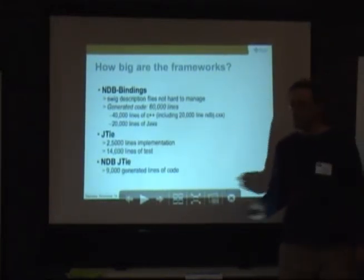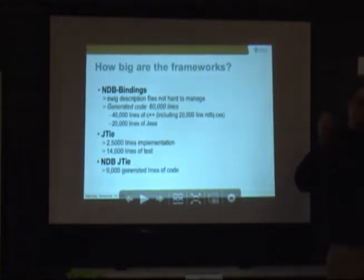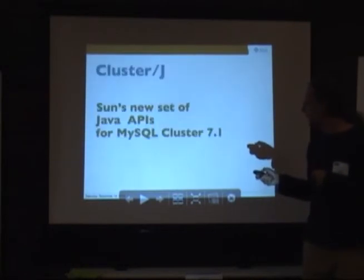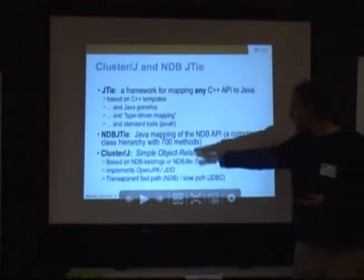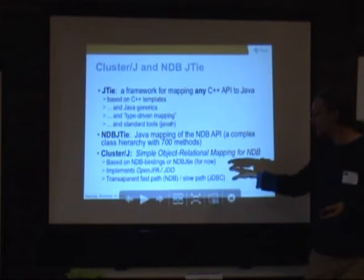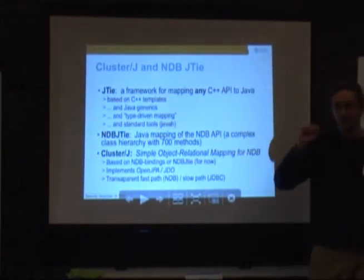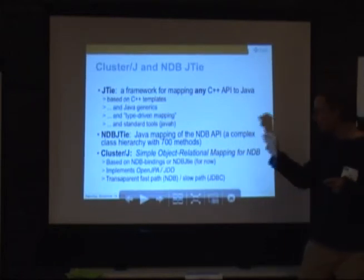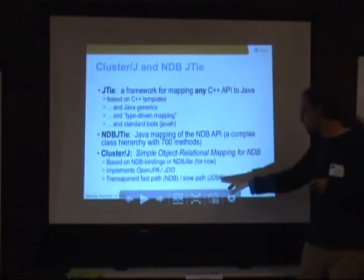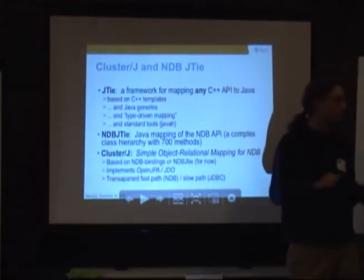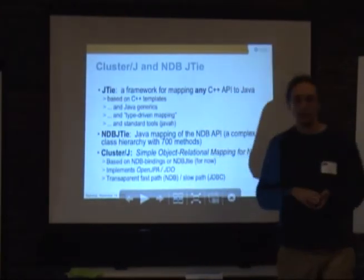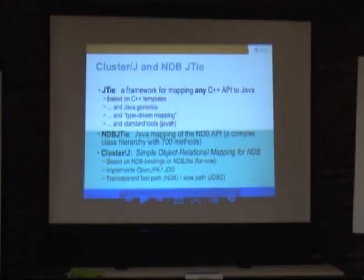On top of this, in ClusterJ there's a transparent fast path and slow path. You need to do an object operation — maybe it goes through the fast path of NDB, maybe it goes through the slow path of JDBC. The developer never sees the difference. And that means this API looks exactly like JDBC — the way it gives you the data and the way it does it.